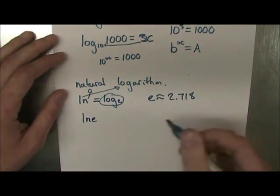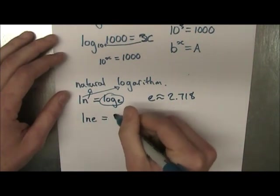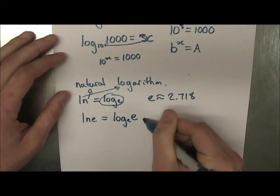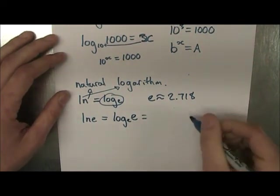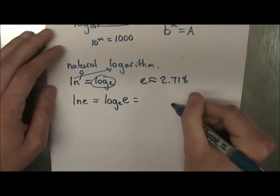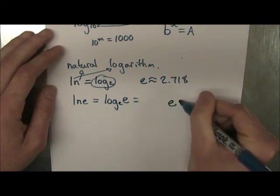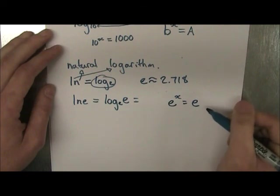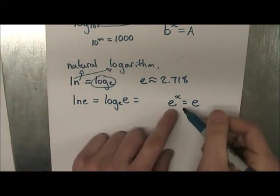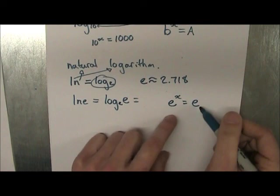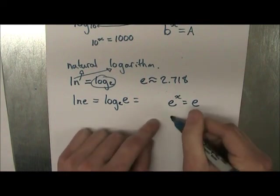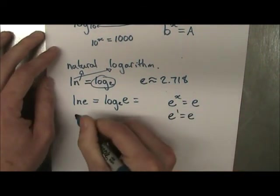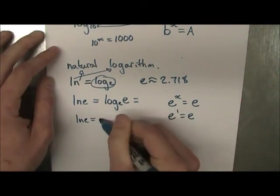They'll put trick questions like ln of e, and this looks really complicated, but if we write it in the log form, you have log e of e, and this is equal to what? Well, remember, when we're solving for a log, we basically take the base to the power of what is equal to the argument? Well, e to the power of what is going to give itself? Well, any number to the power of 1 gives itself. So the answer to ln of e is just 1.